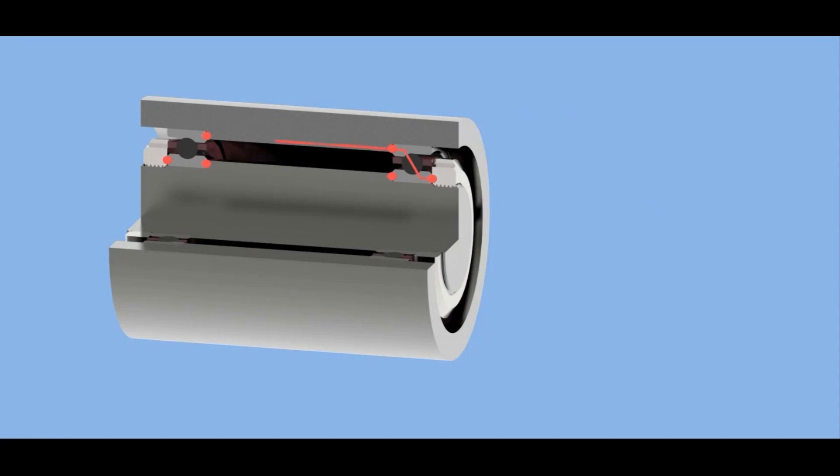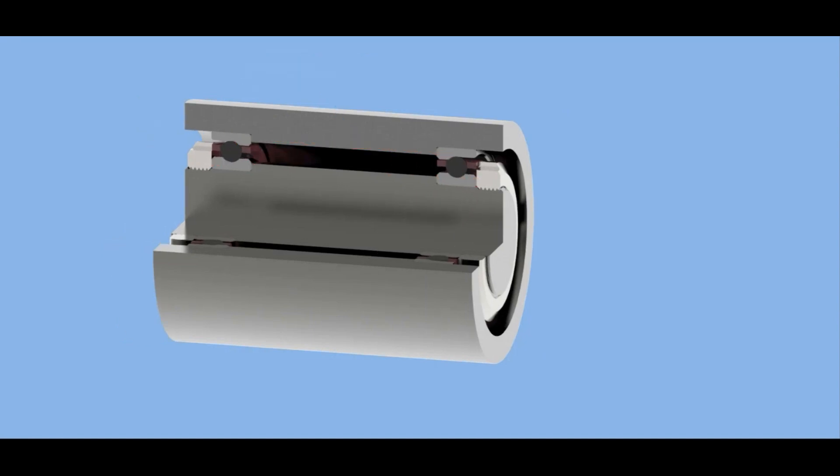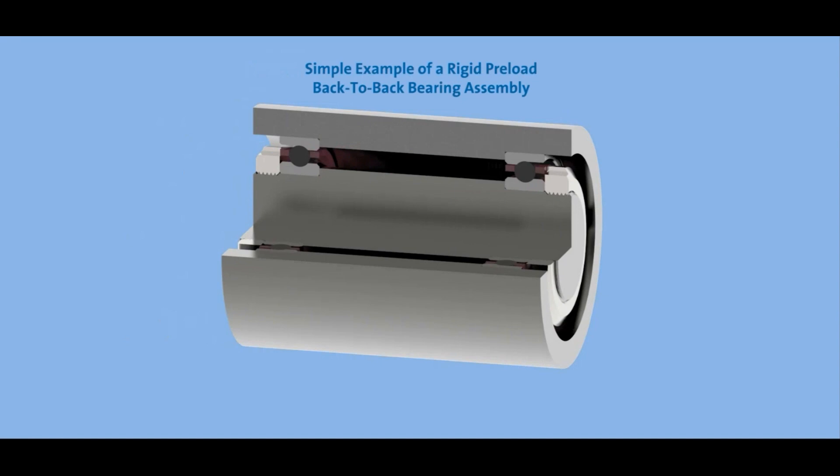And here you can see the load path has been established once that precision lock nut is firmly tightened down. And with that, we have a simple back-to-back rigid bearing assembly.